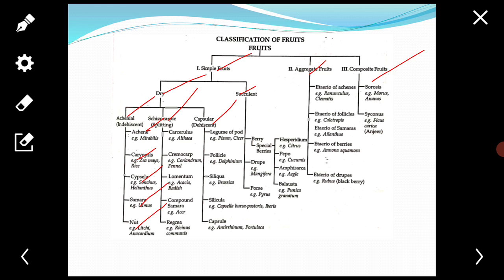Third is cypsela. It develops from an inferior unilocular bicarpellary syncarpous pistil with basal placentation. Example: Sonchus, Helianthus. Fourth is samara. In these fruits it is a winged achene fruit. Example: Ulmus, Alnus.